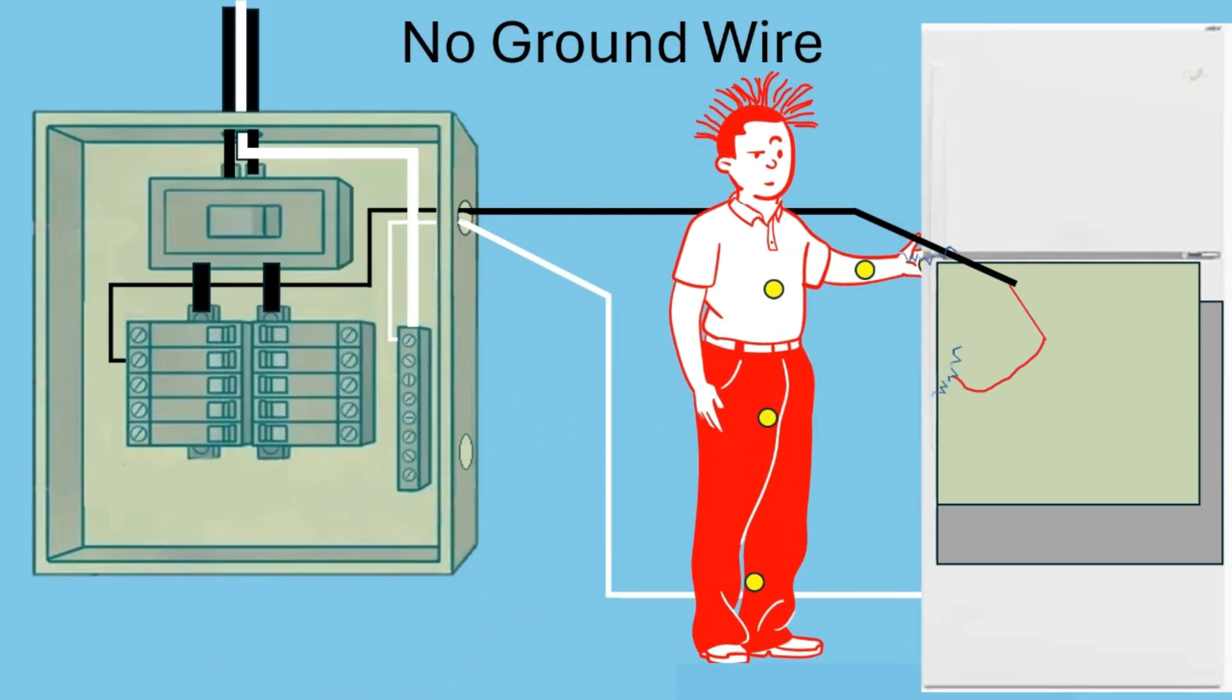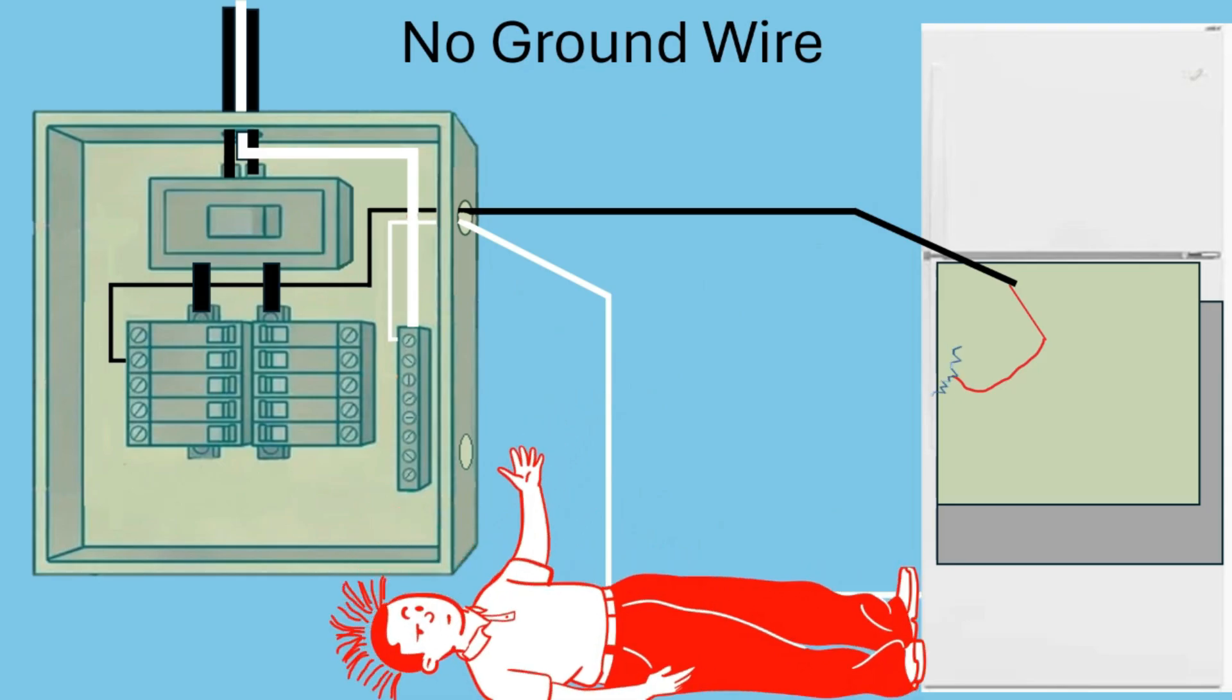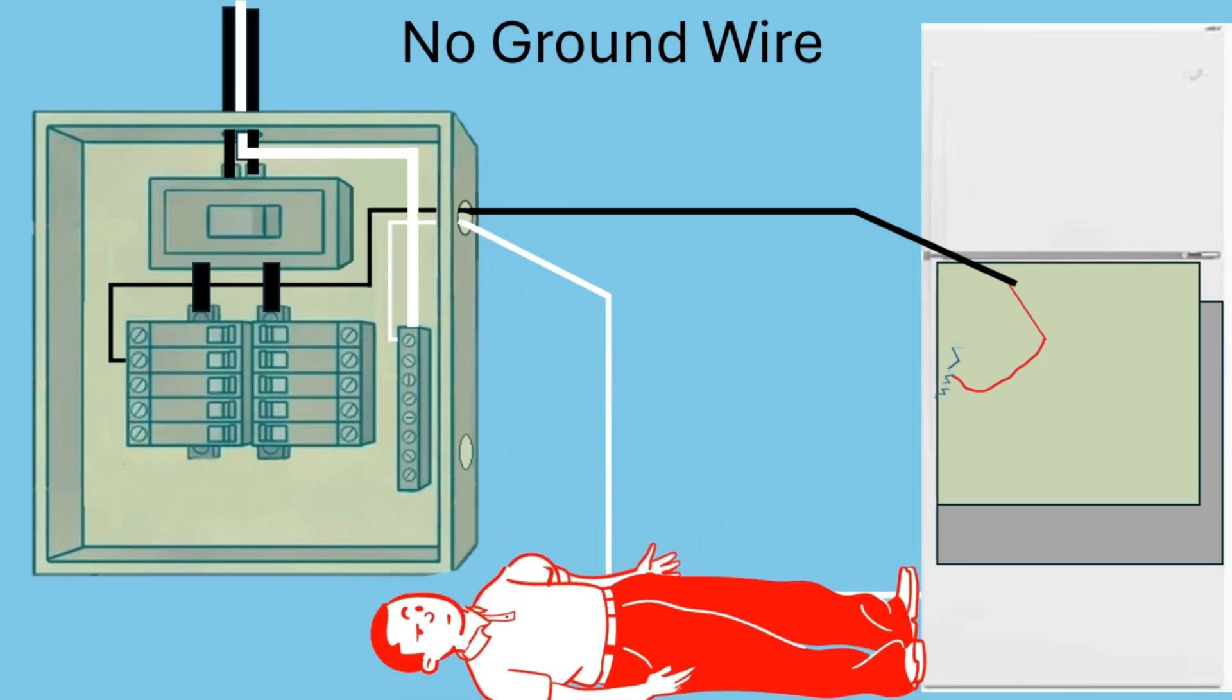Well that entire washing machine will now be energized and if somebody walks up to it and touches it to put a load of laundry in it they have the potential to be electrocuted. So when you have a grounded outlet basically you have a ground wire running from that washing machine back to the electric panel.